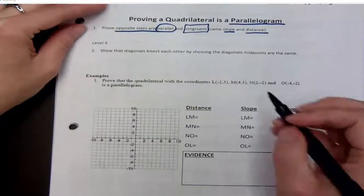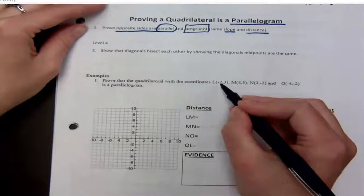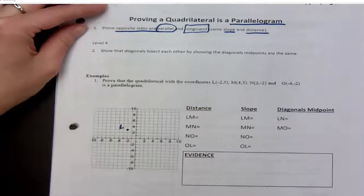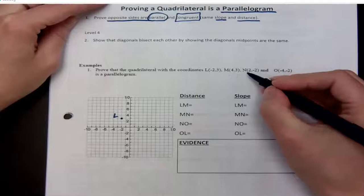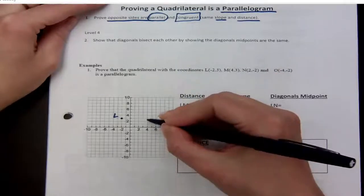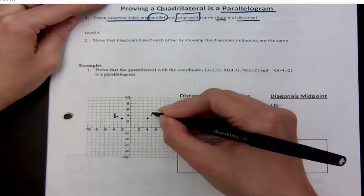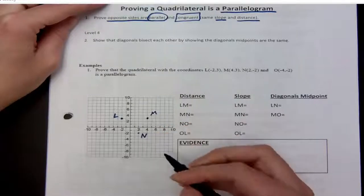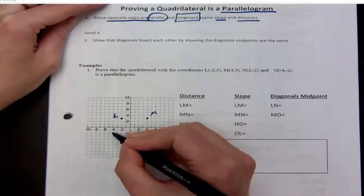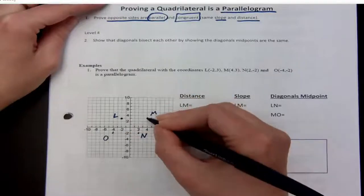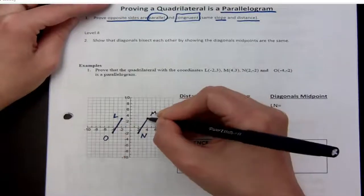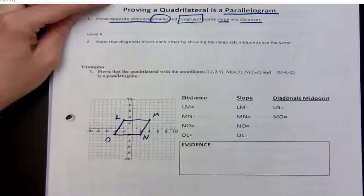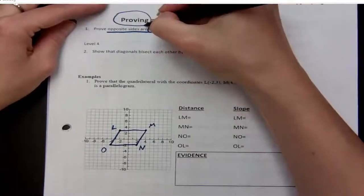We're going to start by plotting our points. L is negative 2, 3. M is positive 4, positive 3. N is positive 2, negative 2. And O is negative 4, negative 2. Then I connect them, and I can see it's a parallelogram. But now I'm going to prove it, because this is about proofs — proving something is a parallelogram.